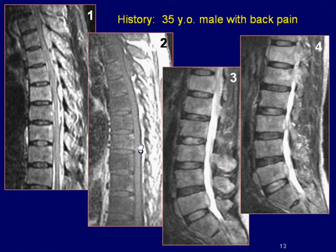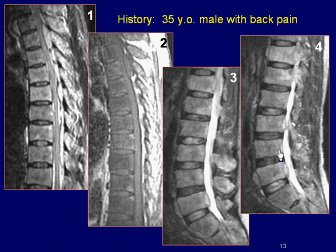Sagittal T1-weighted image shows diffuse low marrow signal of multiple vertebral bodies, indicating replacement of the normal fatty marrow. Sagittal T2-weighted images of the lumbar spine also demonstrate diffuse heterogeneous high-signal in multiple vertebral bodies.